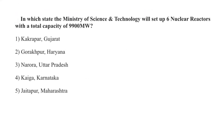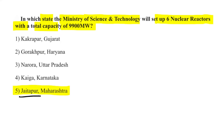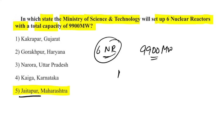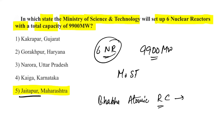The Ministry of Science and Technology will set up six nuclear reactors with a total capacity of 9,900 megawatts in Jaitapur, Maharashtra. Also remember that the Bhabha Atomic Research Center is also located in Maharashtra.